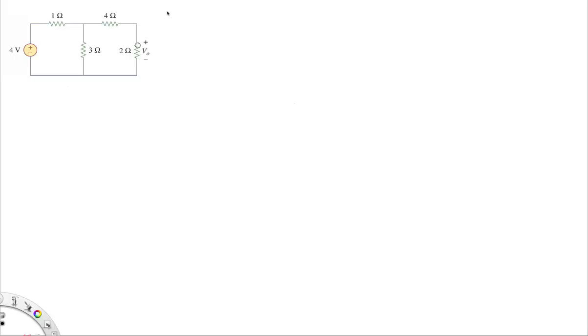This is exercise 4.7 from the text. What I'm going to do is show you the working of this as part of a series of exercises where I will work out different exercises from the text. The problem asks you to use linearity to find out the voltage V naught.